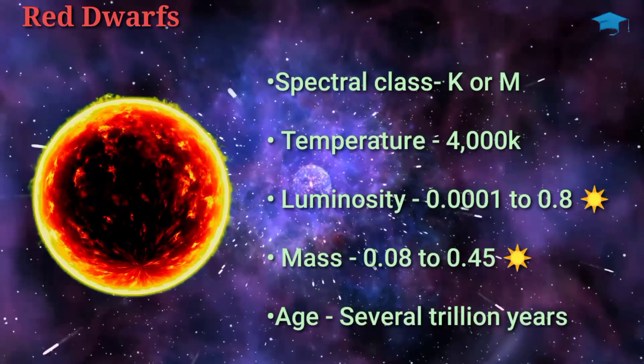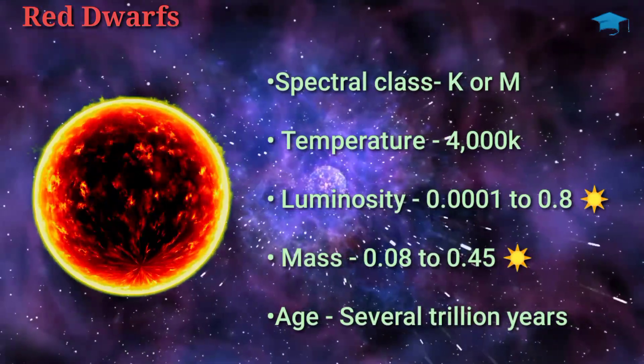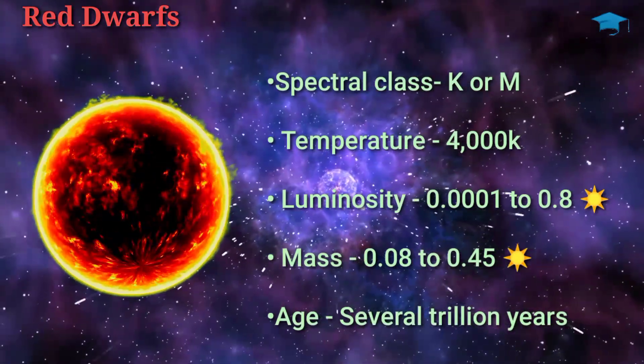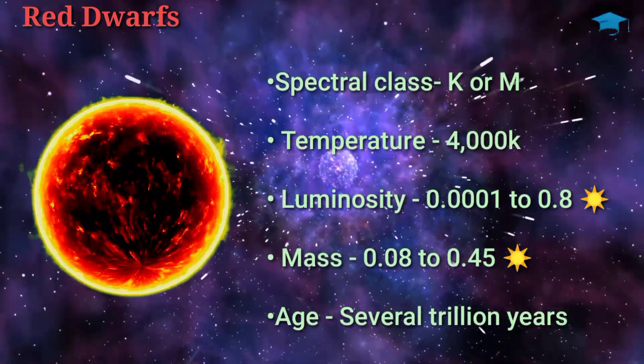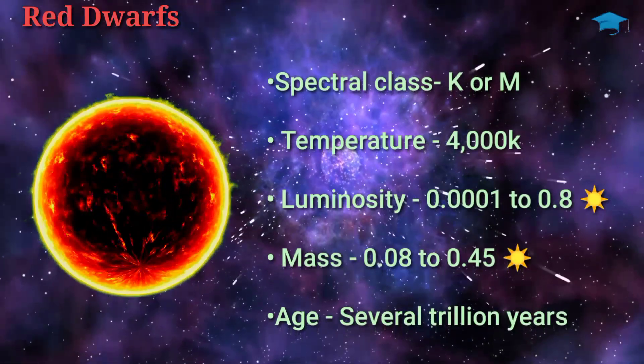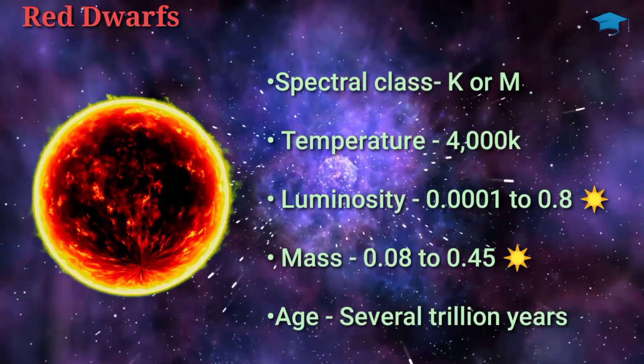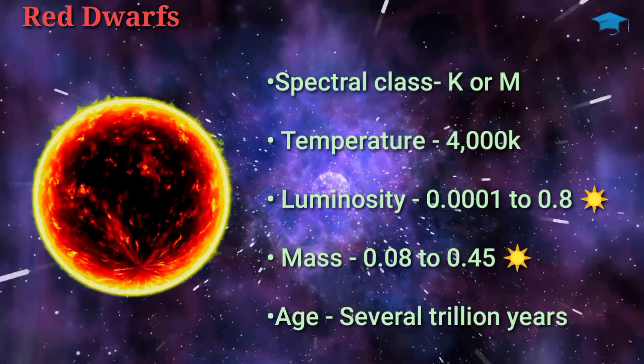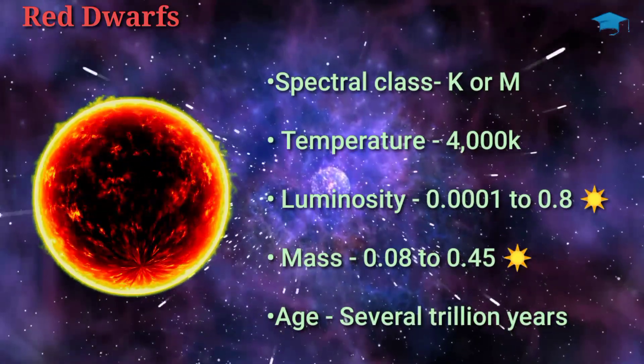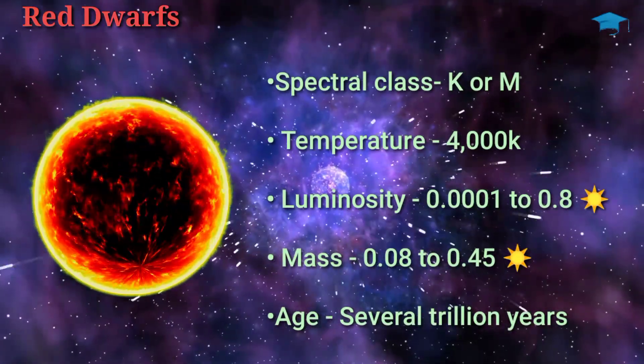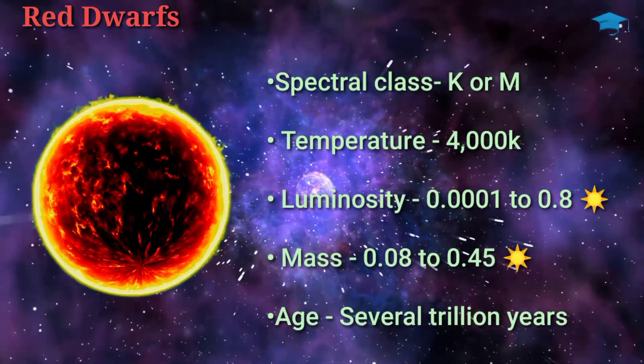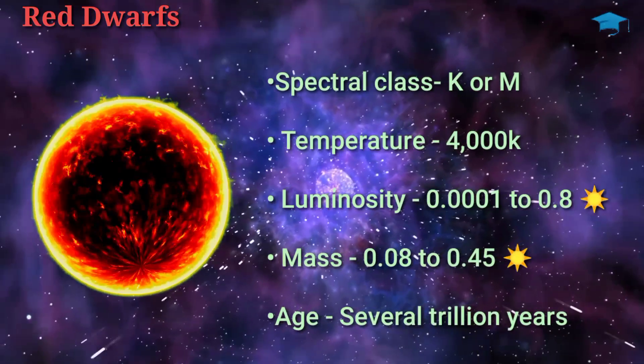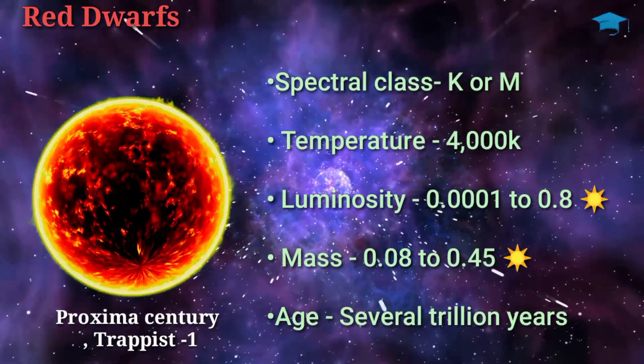The fact behind their long age is that they convert hydrogen into helium both in their core and throughout. Because of this, the nuclear fusion process is slowed down and even prolonged. In simple terms, these stars are fuel efficient. These stars live so long that no red dwarf has yet reached its advanced stage of evolution in the universe till now. Examples of red dwarf are Proxima Centauri and Trappist-1.